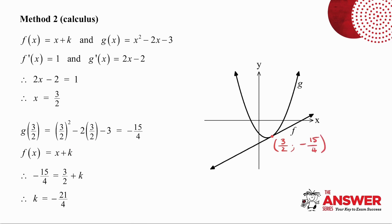I then take this point of intersection and I substitute it into f(x). So in place of f(x) or y is -15/4, and in place of x is 3/2. Solve for k and you get exactly the same answer.